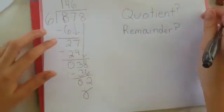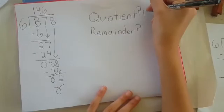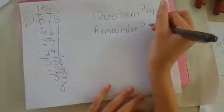So the quotient here, this one is the quotient would be 146 and the remainder would be two.